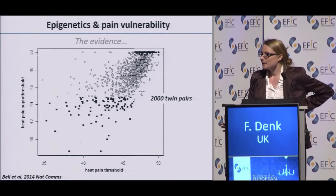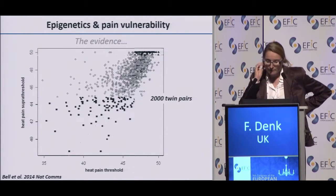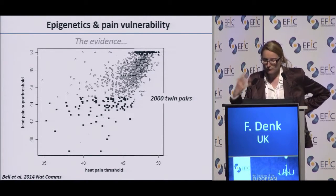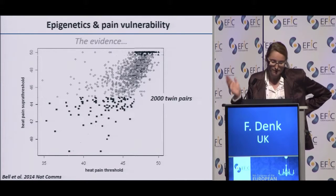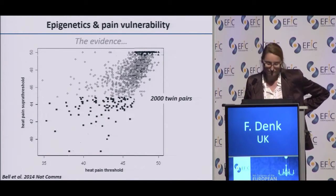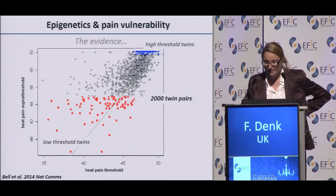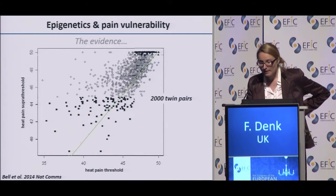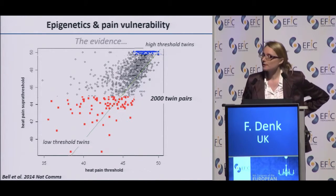First, the twin study. Here we have data from the Twins UK unit at King's College London. This was Tim Spector, Francis Williams, my boss Steve McMahon, Jordana Bell, and many other people. They phenotyped 2,000 twin pairs and looked at the heat pain threshold — when does heat start to hurt? — and the heat pain suprathreshold — when does the heat become unbearable? They picked twin pairs where one twin had a very low threshold and the other had a very high threshold. So these twins have the same DNA but very different perceptions, and the hypothesis was that maybe what differs is the epigenome.